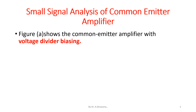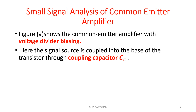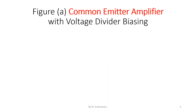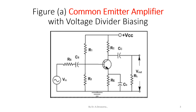Figure A shows the common emitter amplifier with voltage divider biasing. Here, the signal source is coupled into the base of the transistor through the coupling capacitor C suffix C. The coupling capacitor provides DC isolation between the amplifier and the signal source. In this diagram, the input is applied to the base of the common emitter amplifier and the output is obtained at the collector terminal of the common emitter amplifier.